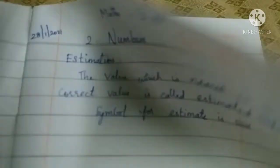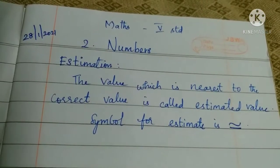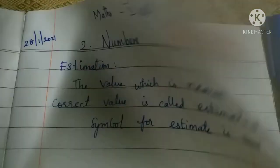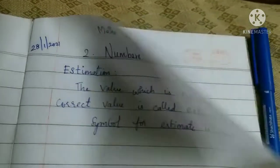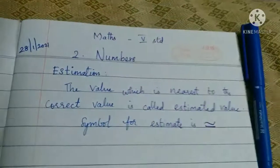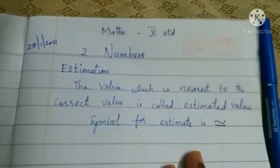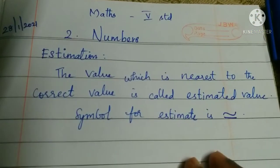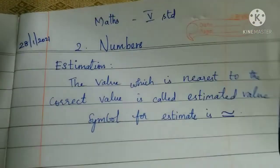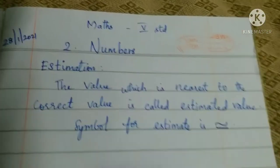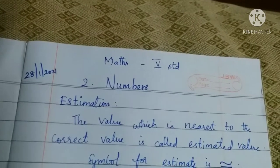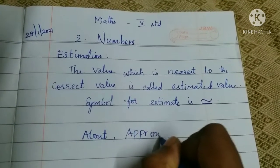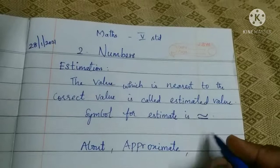Estimation is not the correct value — we are writing the value approximately, which is nearest to the correct value. For example, if you take a handful of groundnuts, you don't count them exactly; you say approximately I have 20 groundnuts. That is the nearest value. The other words for estimation are: about, approximate, or nearby.